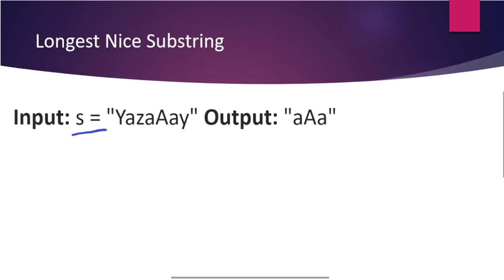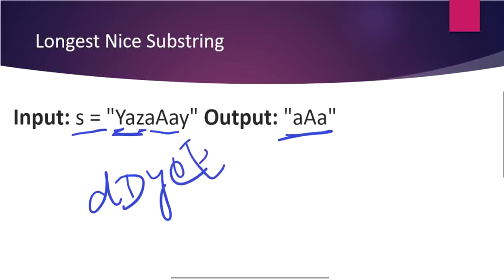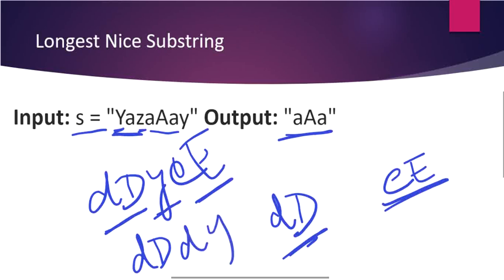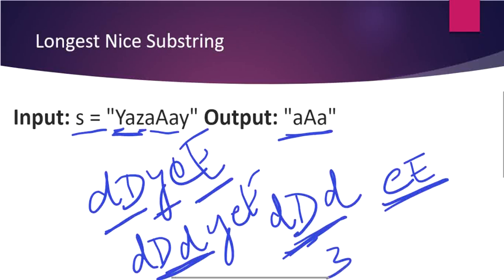In the first example, the longest nice substring is 'Aa' because it contains both small 'a' and capital 'A'. You can't take 'yAz' as a substring because there is no small 'y' and no capital 'z'. In another example with 'dDeEy', both 'dD' and 'eE' form nice substrings since they have both uppercase and lowercase letters, but 'y' cannot be in any nice substring. If the string is 'dDdyEe', then 'dEd' becomes the nicest substring at length 3, compared to 'eE' at length 2.